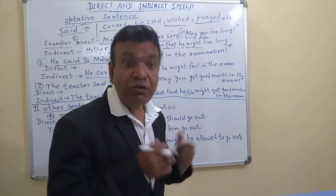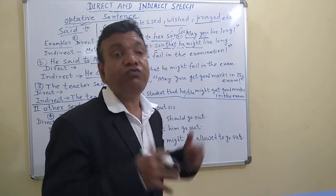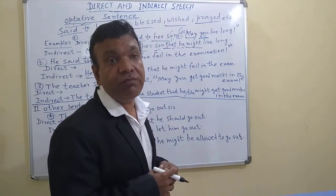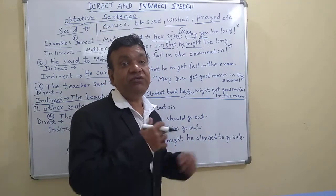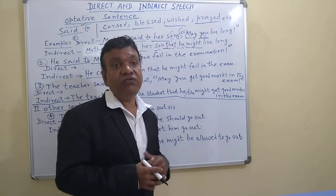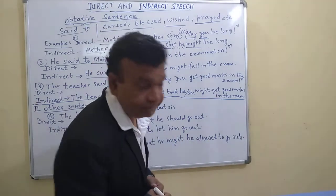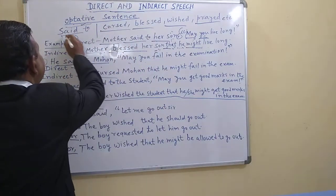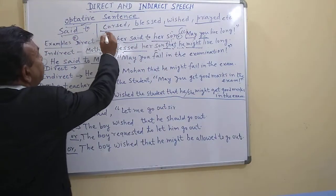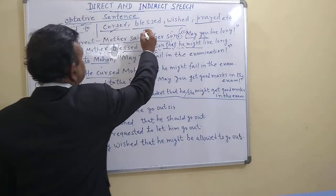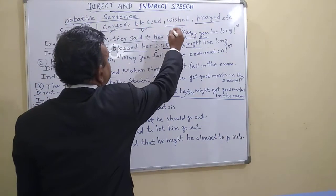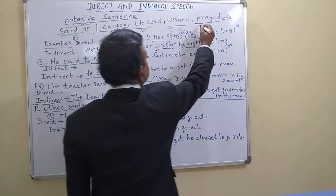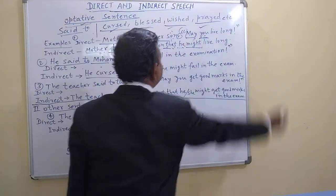Now let's see how to change optative sentences from direct to indirect speech. Here, 'said to' changes into 'cursed,' 'blessed,' 'wished,' 'prayed,' etc., depending on the context.